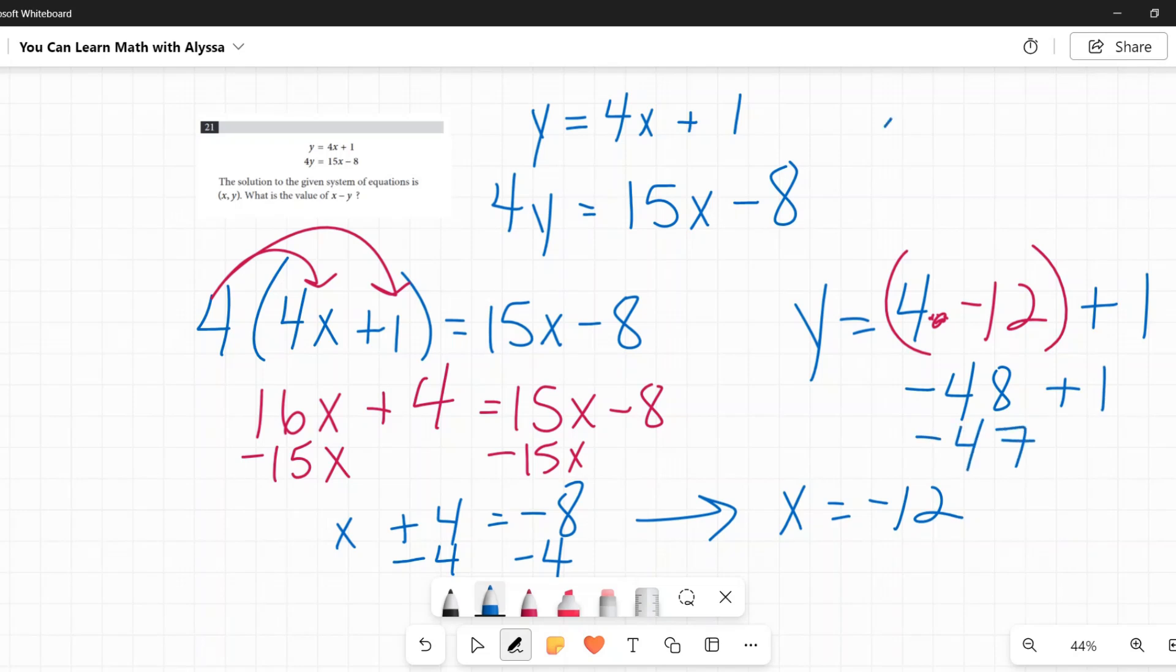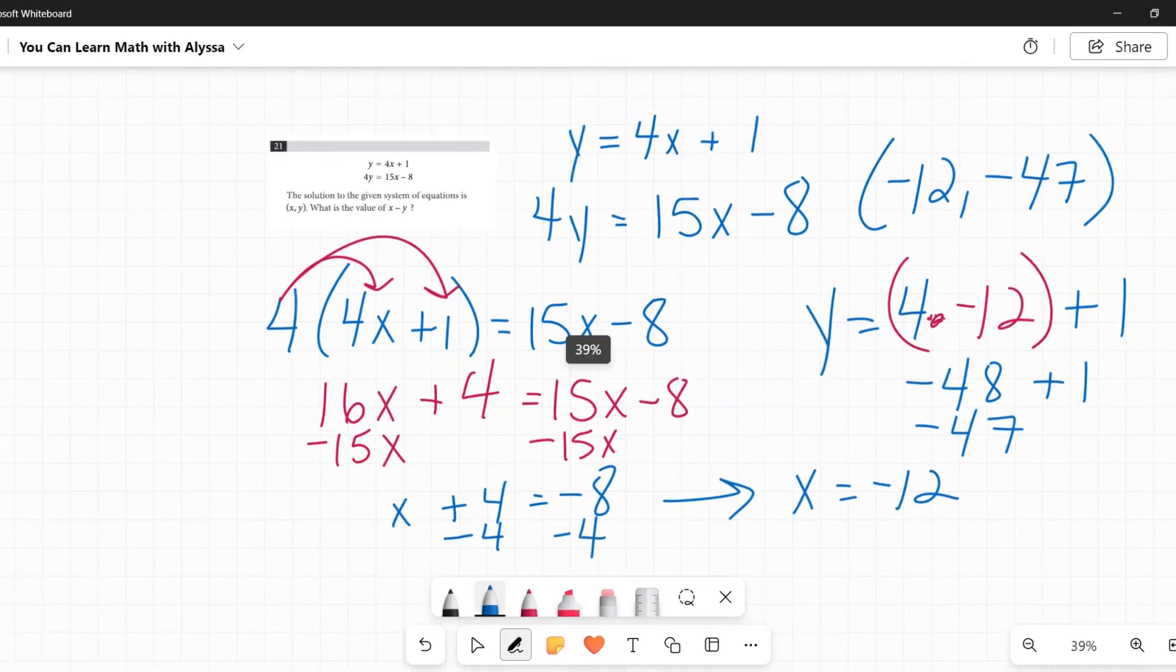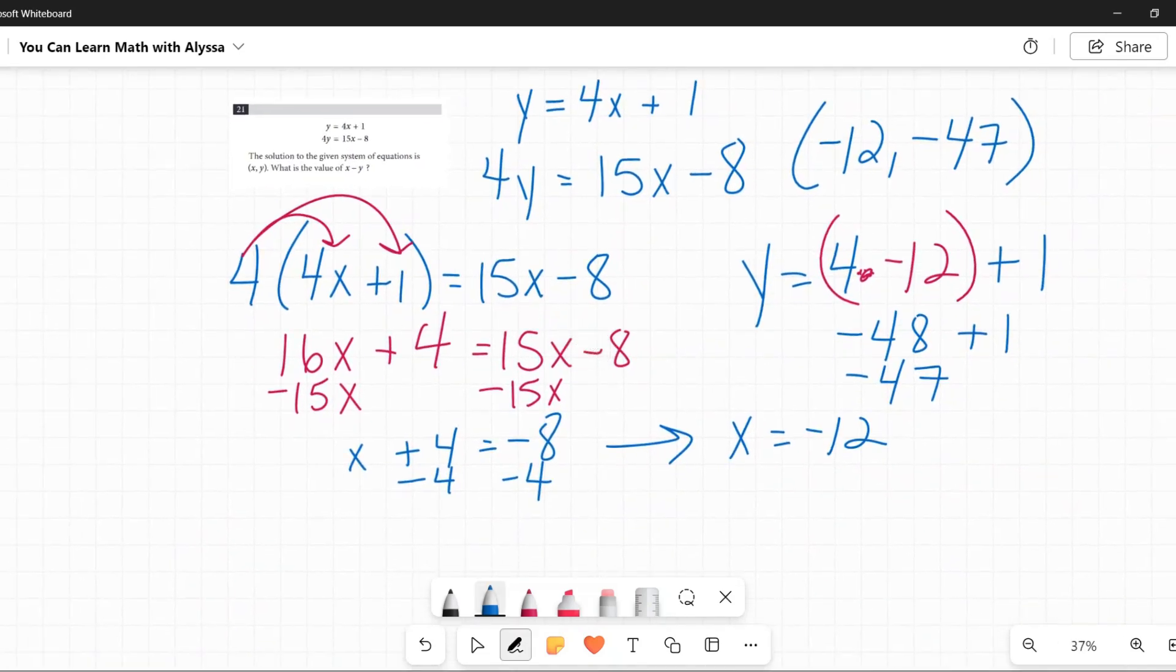So I know my x is negative 12, and my y is negative 47. The question is what is x minus y. Be careful here because we've got these negatives going about. That would be negative 12 minus a negative 47, which would be a positive 35.